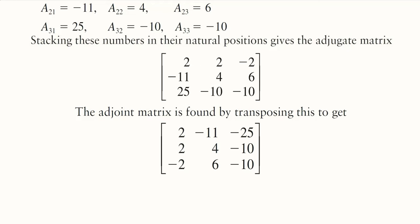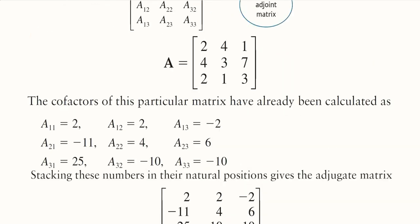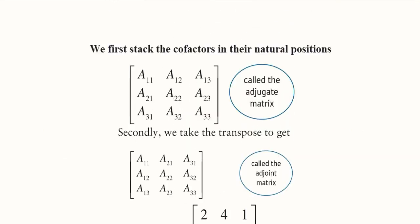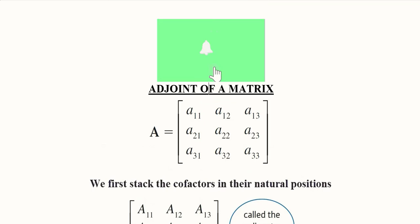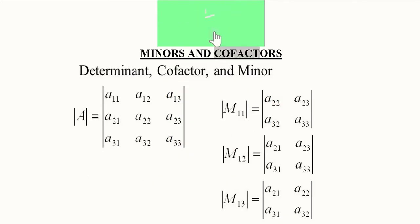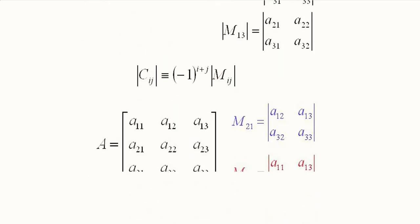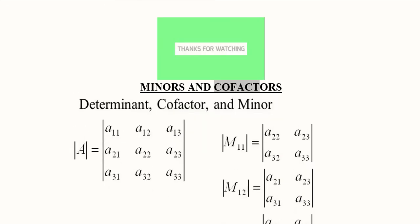The adjugate matrix has been calculated from the cofactors, but we need the adjoint, so we transpose it. After transposing, 2, -11, and 25 are now in the first row instead of the first column. The transpose of the adjugate matrix gives us the adjoint of the matrix, which is very useful for calculating A inverse or the quotient of two matrices. This video covered minors, cofactors, and the adjoint of a matrix.